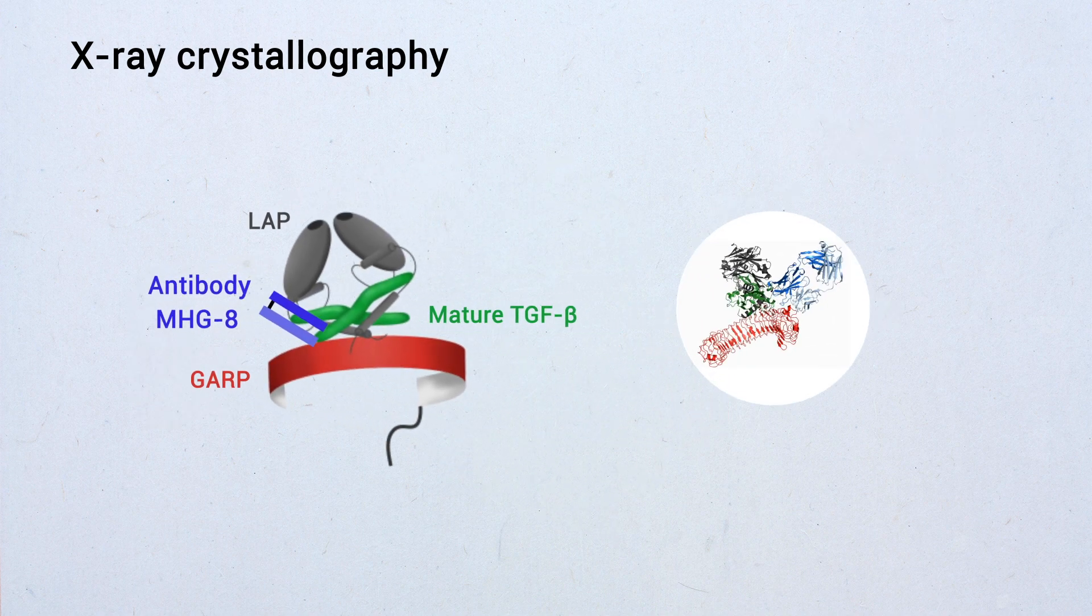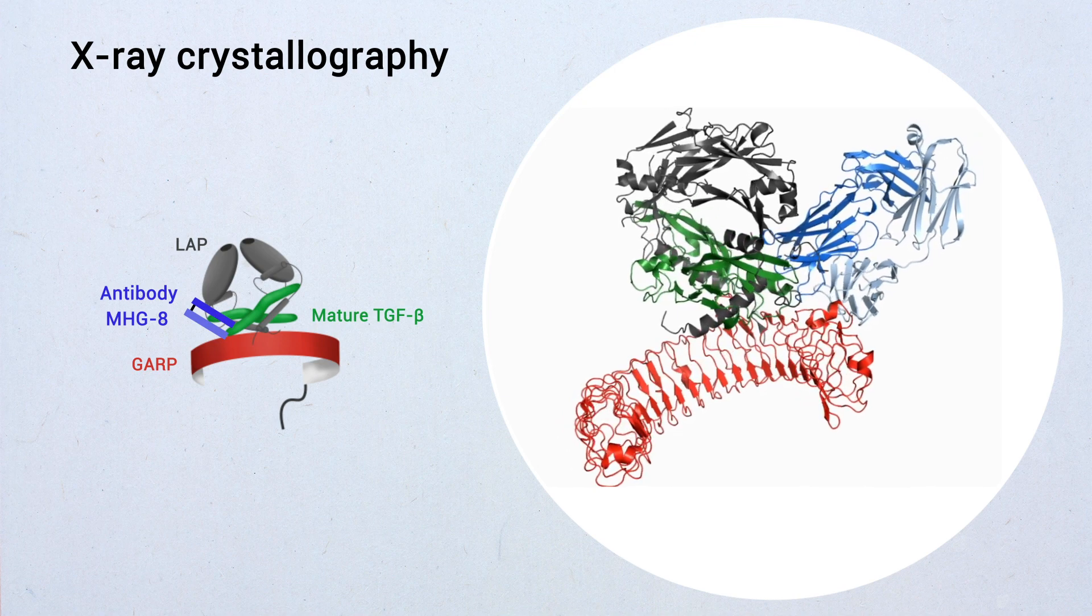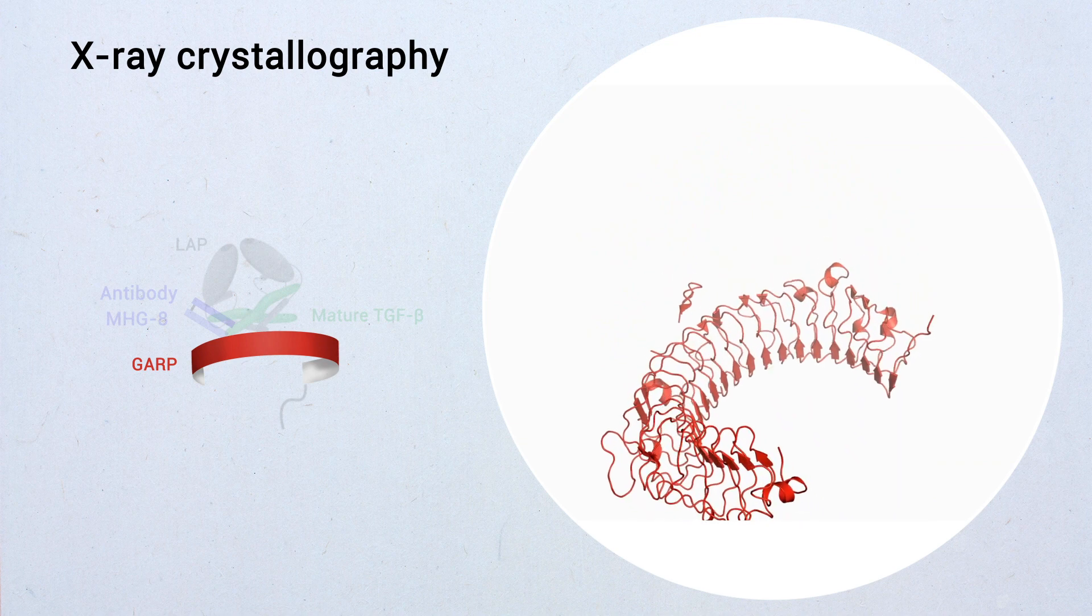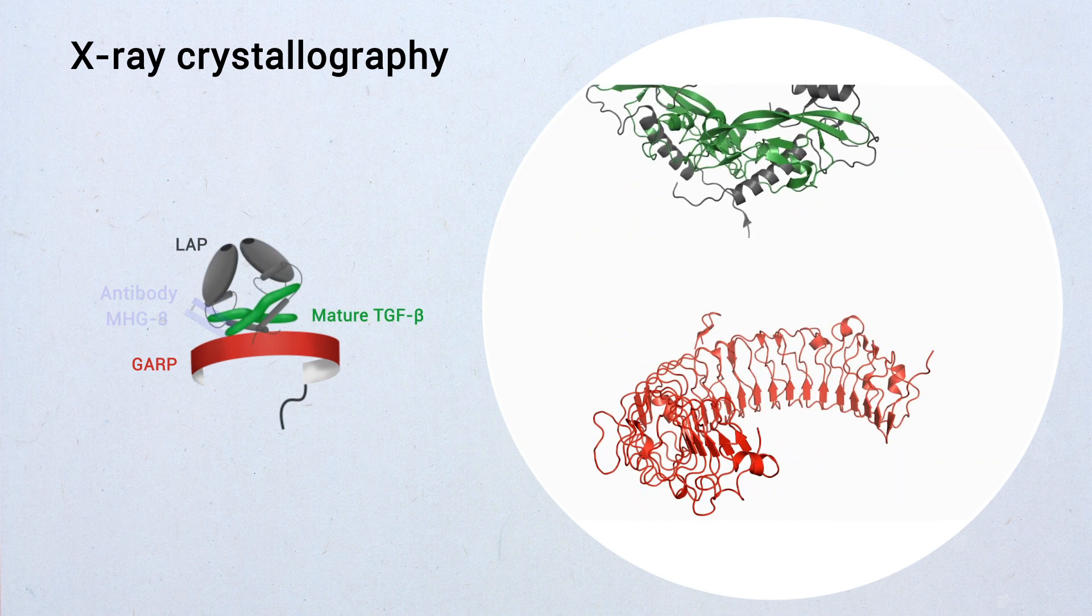We managed to solve the crystal structure of GARP-TGF-beta bound to MHG-8. Our structure reveals that GARP resembles a horseshoe that is straddled by TGF-beta.